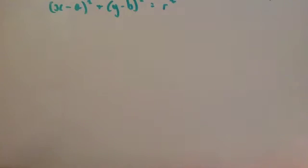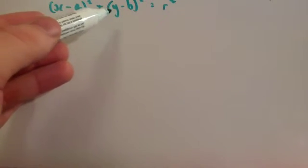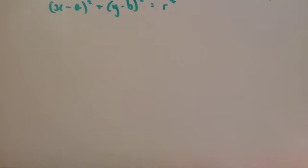So as we've seen, the equation of a circle is (x minus a) squared plus (y minus b) squared equals r squared. Now let's have a look at some circles and get their equations.